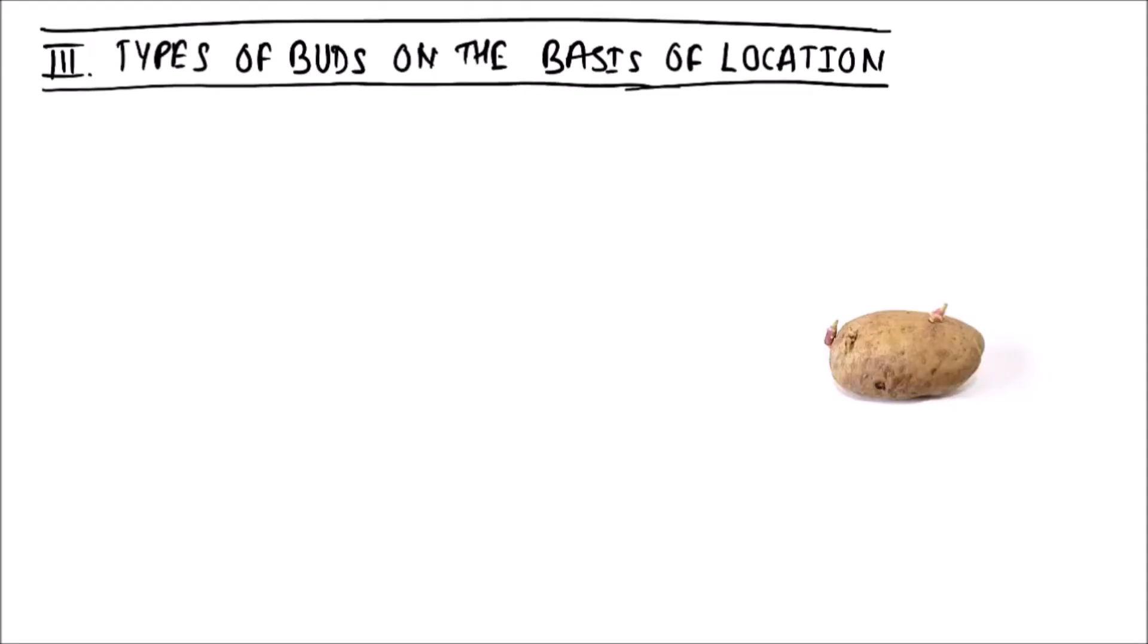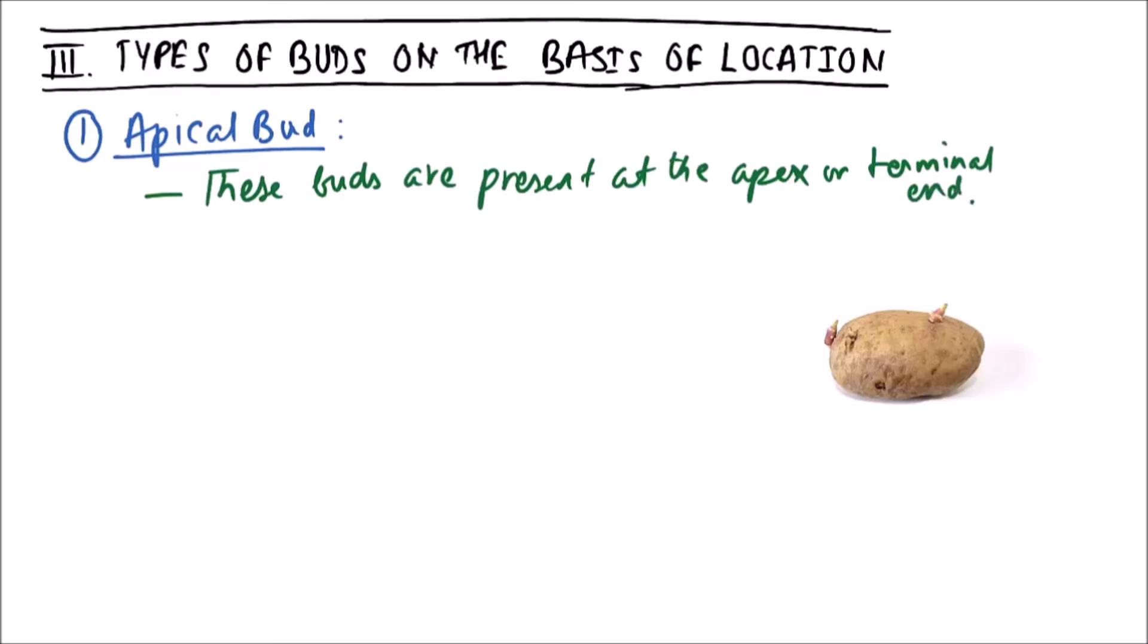Hello friends, welcome to Studio Biology. In this video we are going to discuss the types of buds based on location. The first one is apical bud. These buds are present at the apex or terminal end. It's important to note that these are responsible for increasing the height of the plant.